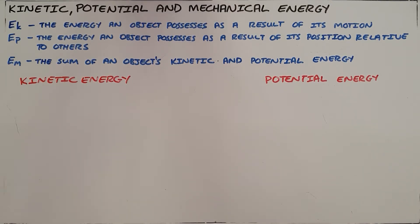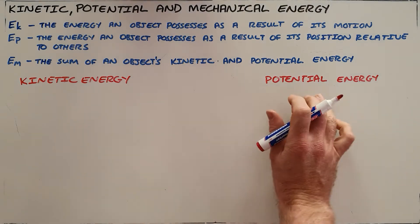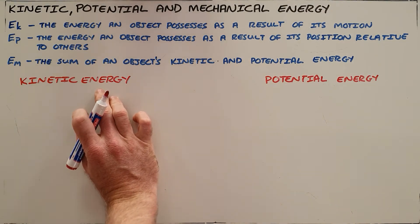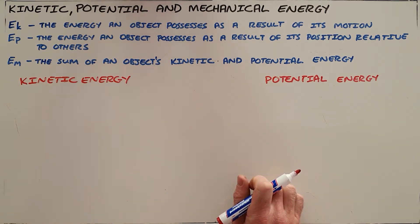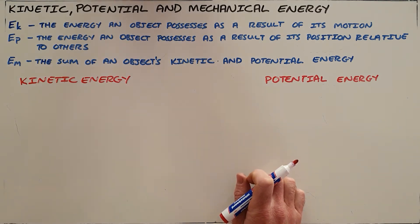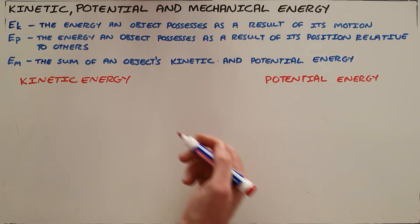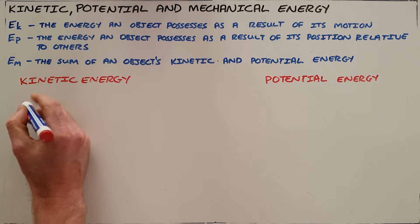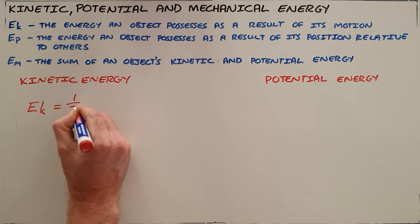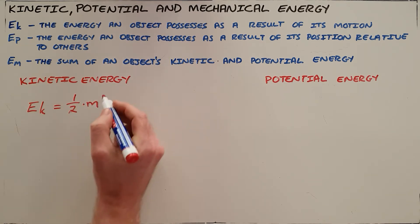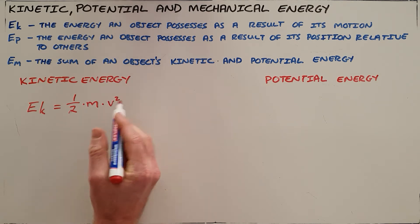We know that energy is the capacity to do work, and we deal most often with energy in two forms: kinetic energy and potential energy. Kinetic energy is the energy an object possesses as a result of its motion — essentially the energy a moving object has that would be required to be transferred or removed in order to change the motion of that object. As a result of that definition, we say that Ek is equal to one half times the mass of that object times the velocity of that object squared.